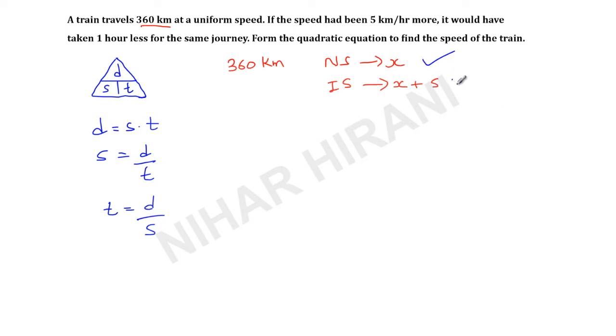If you understood this, you are almost done. So now I will write: time taken when speed is normal minus time taken when speed is increased equals one hour. Now I will substitute the values.